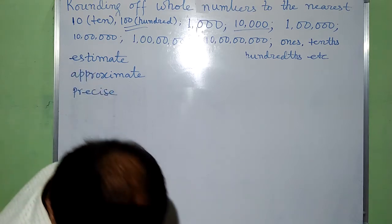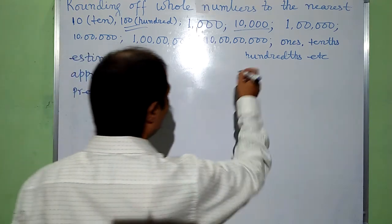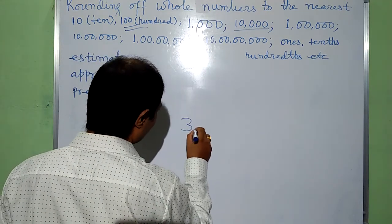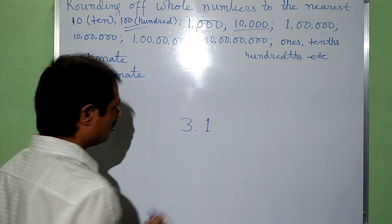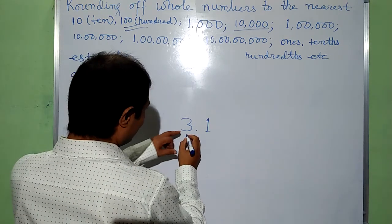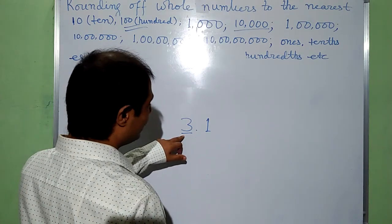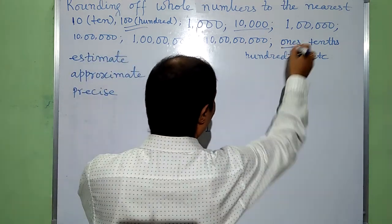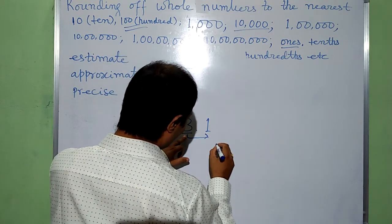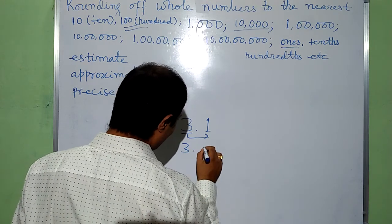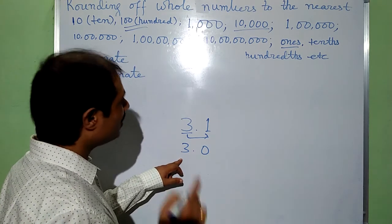All these rounded values are known as approximate value, precise value, or estimate value. Now, rounding to the 1's place: suppose a decimal number is given. We need to round the digit at the 1's place, that is 3. We look just to the right of this digit, that is 1. Since 1 is less than 5, this will remain as it is and the decimal part will be changed to 0. This is rounding to the nearest ones.